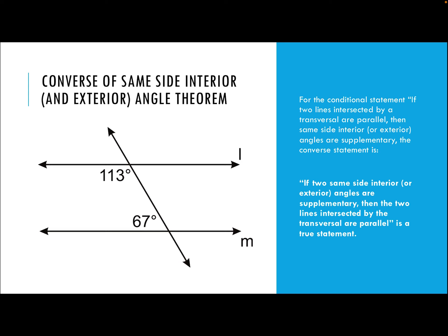The next converse theorem is for same side interior angles. For either same side interior or same side exterior, if a pair of those angles are supplementary, then the lines that form those angles are parallel. In this case, we have 113 and 67, and clearly 113 plus 67 gives us 180. Because these angles are supplementary, line L and line M are parallel to each other. Also, the same side exterior angles — this angle is 67 degrees and this angle is 113 degrees.